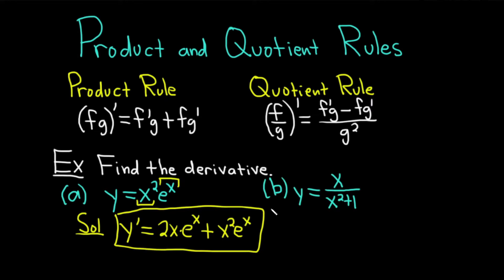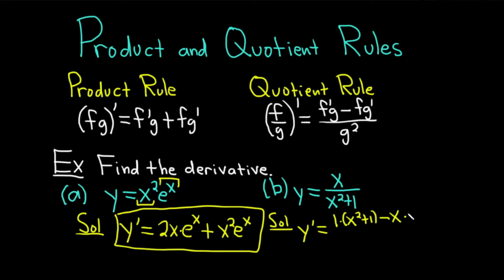Part b: y equals x over x squared plus 1. We have a quotient, so we're going to use the quotient rule. f is our top function, so that's x, and g is our bottom function, so that's x squared plus 1. So y prime is equal to the derivative of the top function, which is x, so that's 1, times the bottom function, which is x squared plus 1, minus the top function, which is x, times the derivative of the bottom function, which is 2x via the power rule. All over the bottom function, which is x squared plus 1, squared.